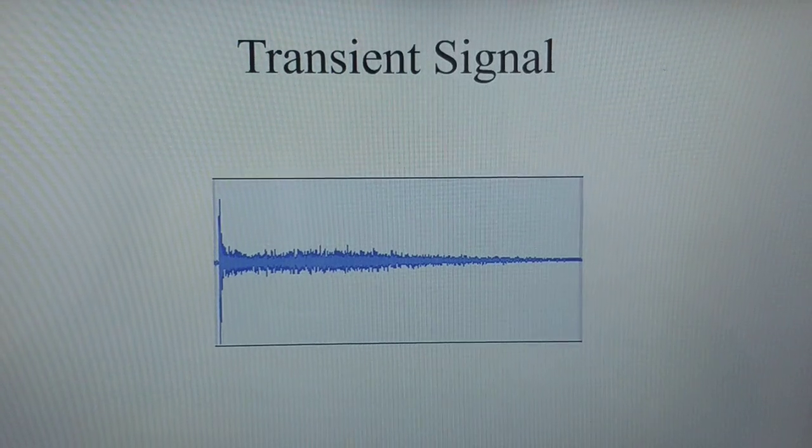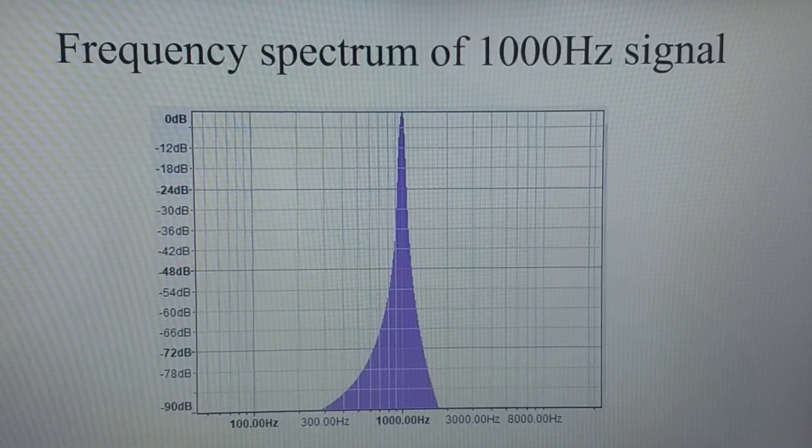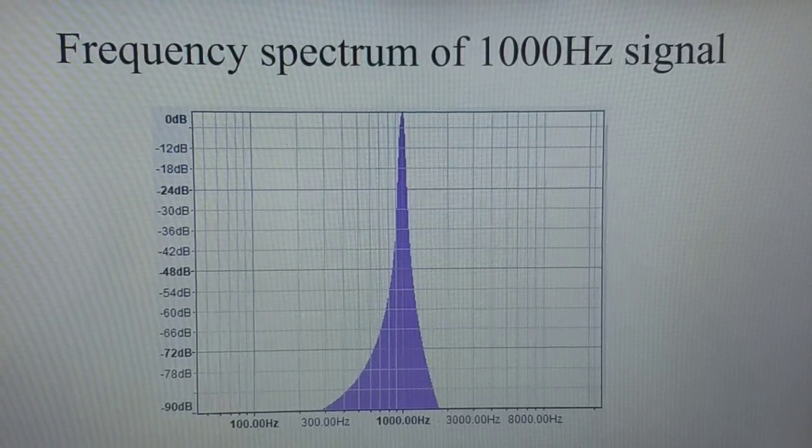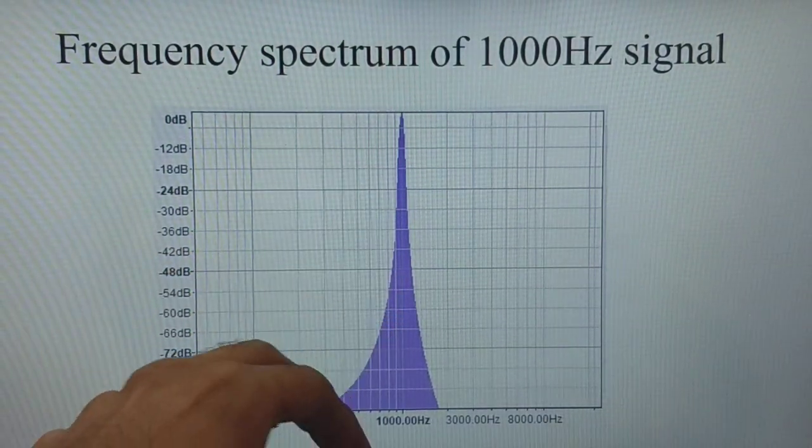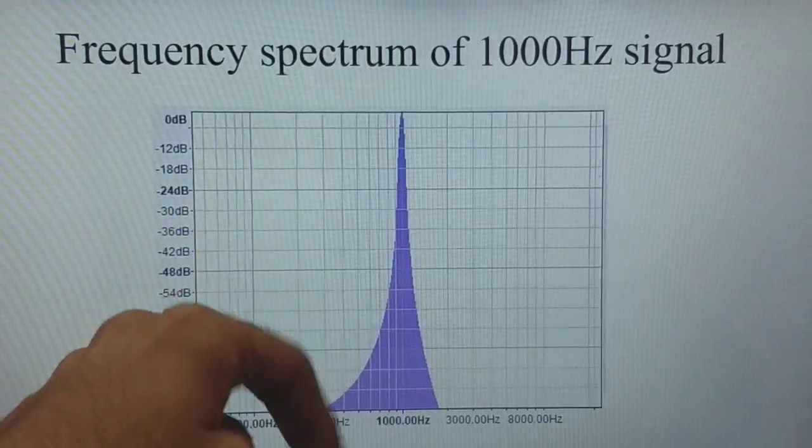Now let's look at the frequency spectrum of these two signals. So this is a frequency spectrum of a 1 kHz signal. Since it has only one frequency, we can see like it's a very narrow band event. If it comprise of two or more frequencies, we can see two or more bands.